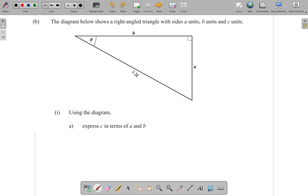We could use Pythagoras theorem. Pythagoras theorem says that C squared, the hypotenuse squared, is equal to one side squared, A squared, plus the other side squared, B squared.